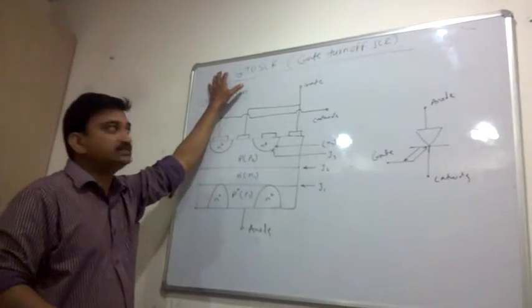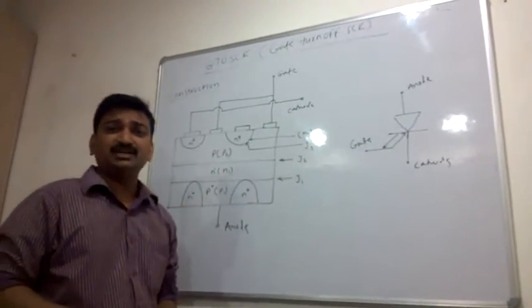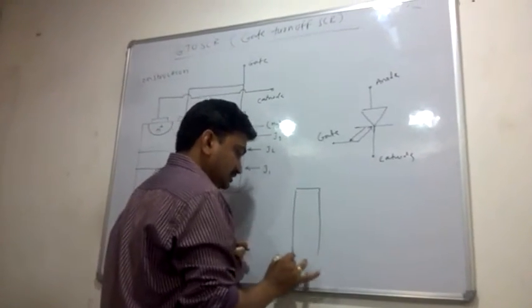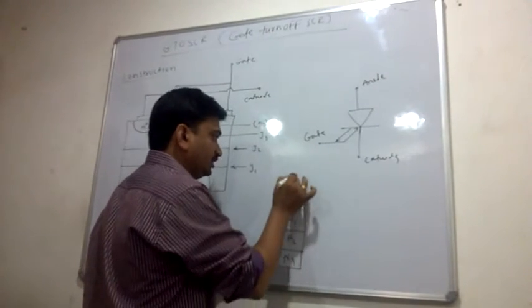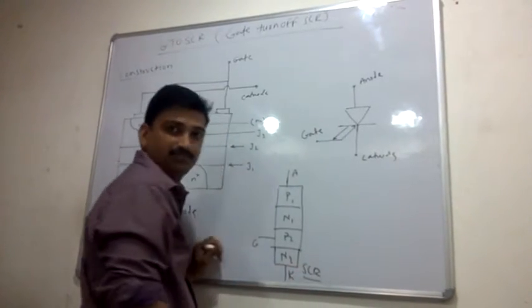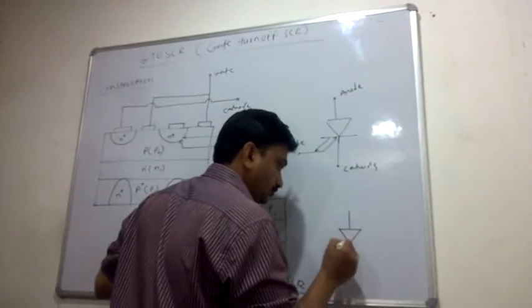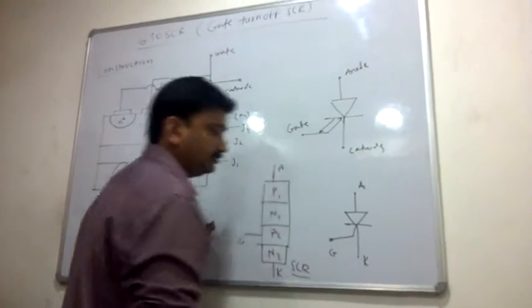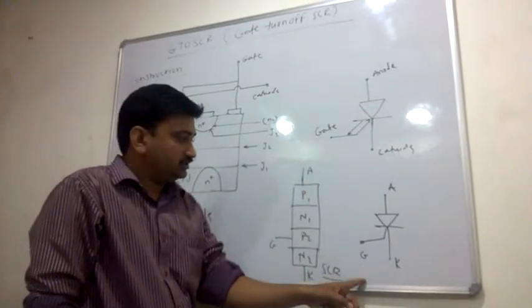Here is the construction of GTO SCR — that is the Gate Turn Off SCR. Gate Turn Off SCR is a modification of the regular SCR. This is the construction of SCR: this is the anode, this is the cathode, and here is the gate. The symbol of SCR is like this — this is the gate, this is the anode, and this is the cathode.